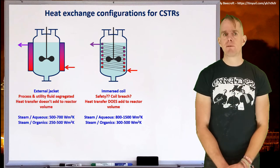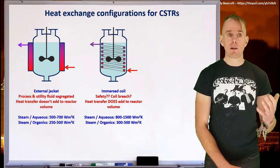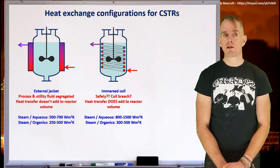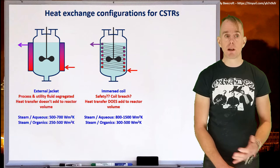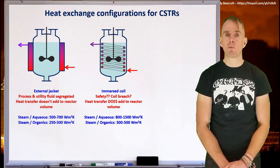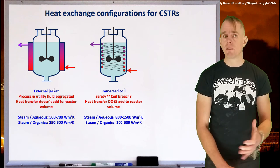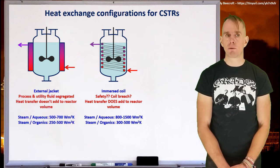The advantage of having a coil inside your reactor, of course, is higher heat transfer. And so if you, again, you're having steam contacting an aqueous mixture, you can get almost double what you might expect from an external heating jacket, 800 to 1500 Watt per square meter Kelvin. And again, steam to organics, you're only still getting about 300 to 500 Watt per square meter Kelvin.